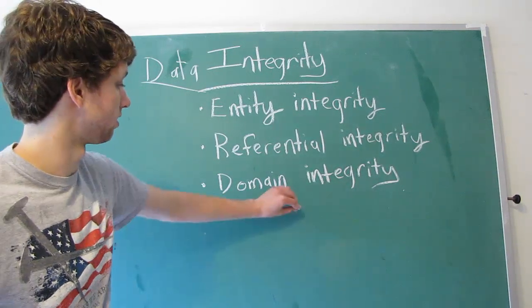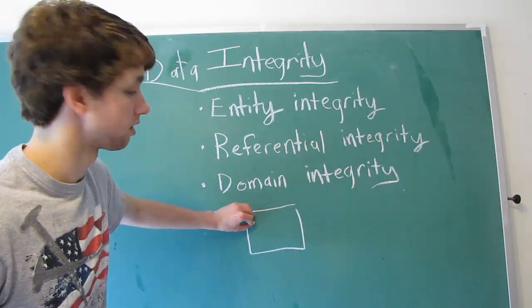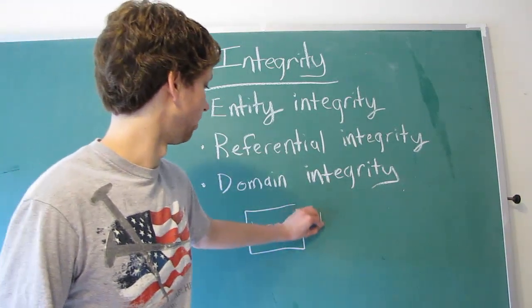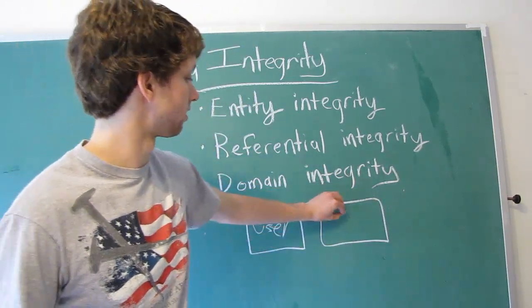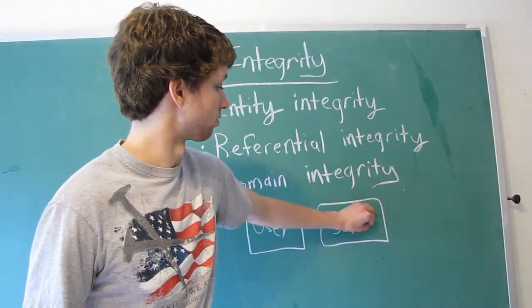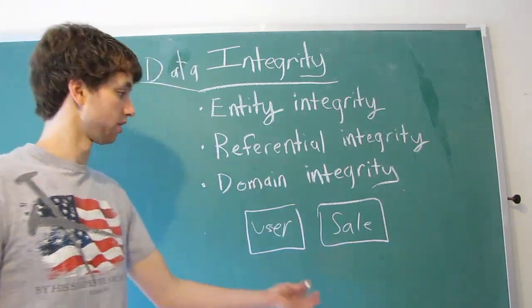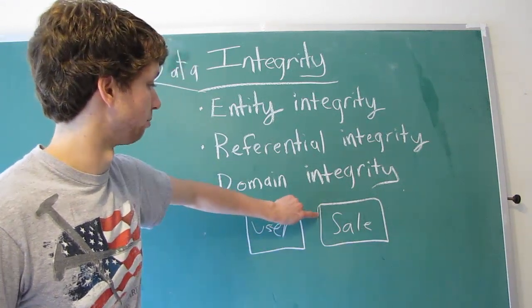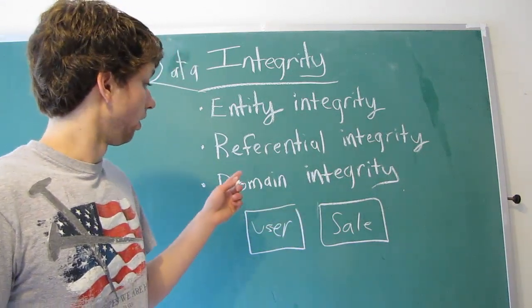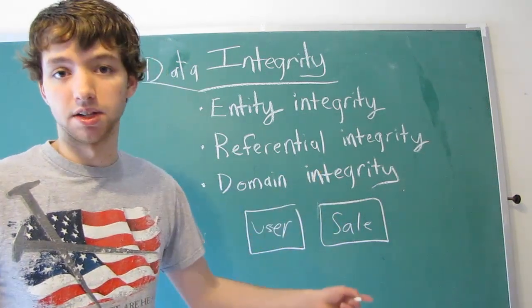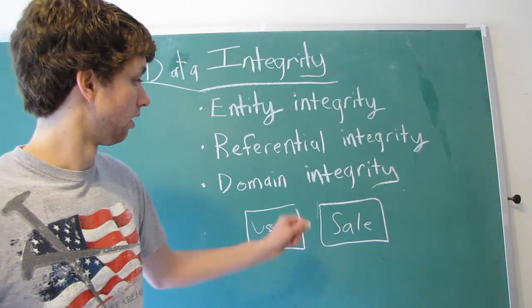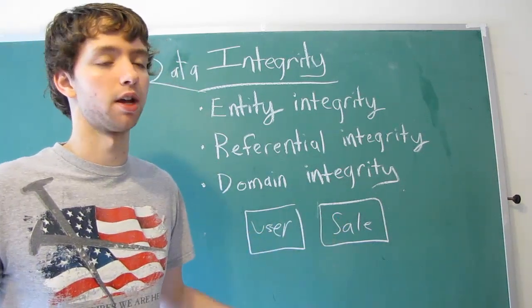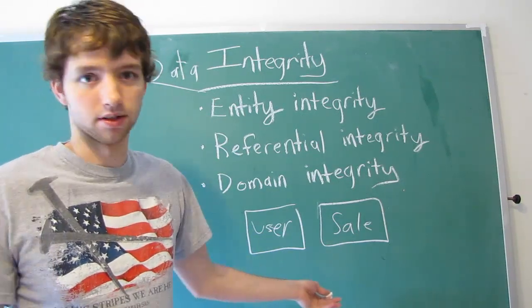For example, in the last video I gave the example, you have a table here, and this is the user table. And then we have a table over here, and that is the sale table, which is where you sell products. This is just an example to illustrate my point. A sale is when a user buys product. That means a sale needs a user as the buyer. Otherwise, there's no sale. We can't have a sale if no one bought it.